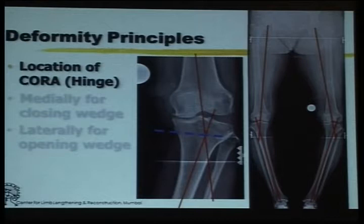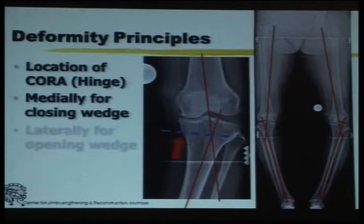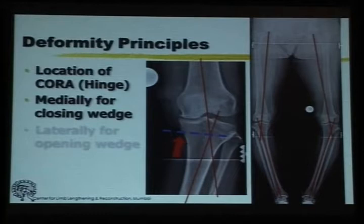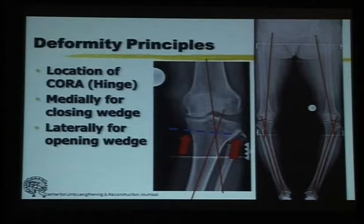If you look at the deformity principles, we draw a proximal axis and a distal axis. Where these two lines intersect, you see the blue dotted line — that is known as the bisector line — and your CORA, or the hinge around which you correct this deformity, is either on the medial side if you are doing a closing wedge, or on the lateral side if you are doing an opening wedge. If your CORA is at this level, biomechanically you get a good correction without any real residual deformity.